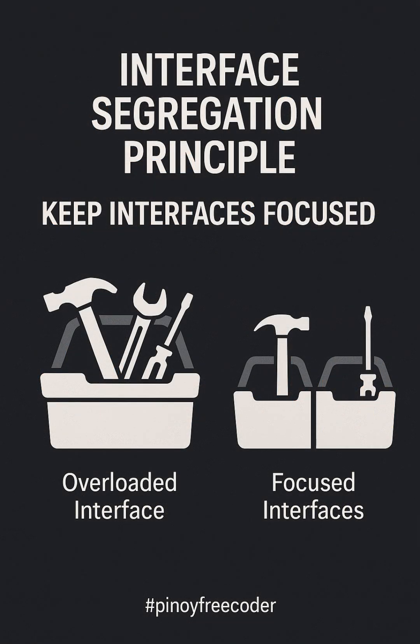To wrap up, the Interface Segregation Principle helps us keep our code clean and efficient by focusing on what each class really needs. Instead of forcing classes to implement unnecessary methods, we break down large interfaces into smaller, more specific ones. This makes our code easier to maintain and understand. Remember, focused interfaces — just like focused toolboxes — make everything simpler and more manageable.